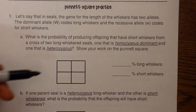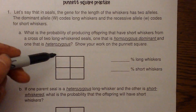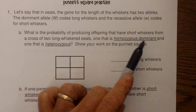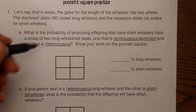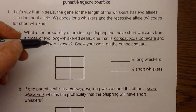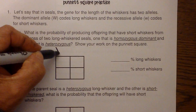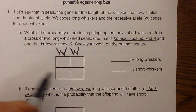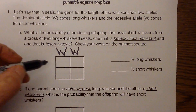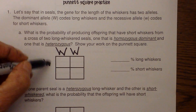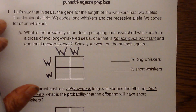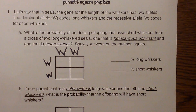Let's follow the steps. We've already drawn the box, so now let's set up the parents. One parent is homozygous dominant using W, so that's capital W capital W. The heterozygous parent will be capital W lowercase w, because heterozygous means the two letters are different.